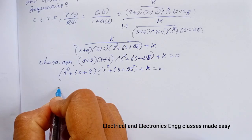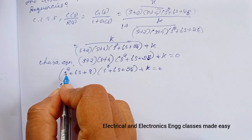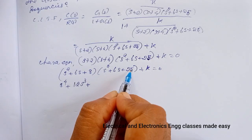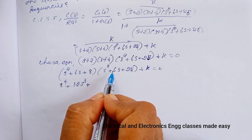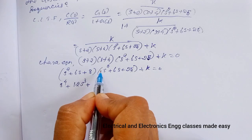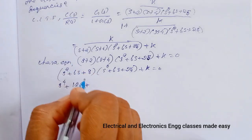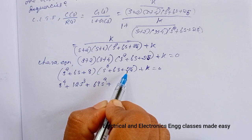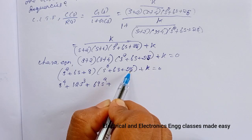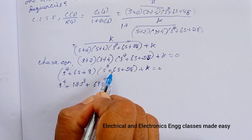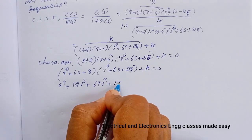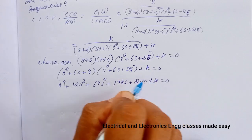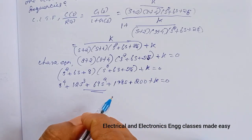Expanding further: s⁴ + 6s³ + 25s² + 6s³ + 36s² + 150s + 8s² + 48s + 200 + K = 0. Collecting terms: s⁴ + 12s³ + (25+36+8)s² + (150+48)s + 200 + K = 0, which gives s⁴ + 12s³ + 69s² + 198s + (200 + K) = 0. This is the characteristic equation.